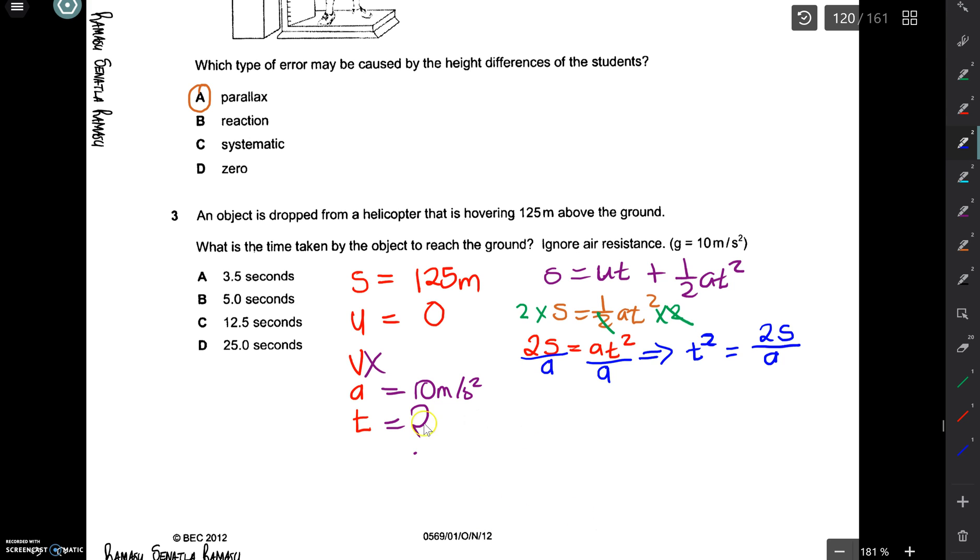So then we need to end up with just T on its own, not T squared. So then what we do next is that we take the square root of both sides. And we end up with T is equal to the square root of 2S over A.